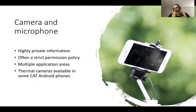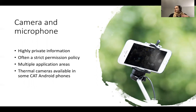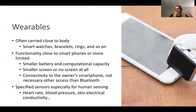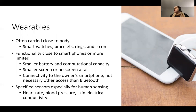Regarding privacy, cameras and microphones represent even higher privacy risks, as they have direct impact on your environment. While they are useful for surveillance and other purposes, you should consider whether you can achieve the same goal without collecting camera and microphone data — for example, using the accelerometer or another sensor instead.